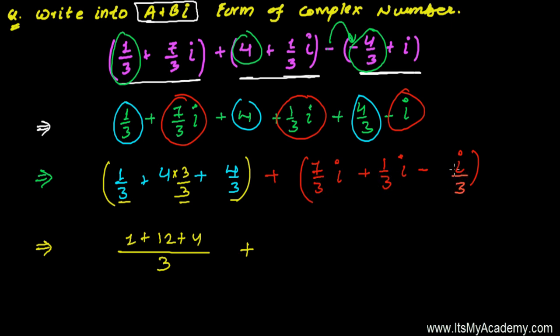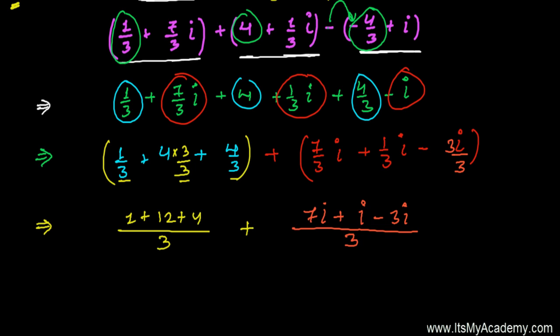For the imaginary parts, we also take LCM of 3. Dividing and multiplying by 3 where needed, we get 7i + 1i - 3i over 3.